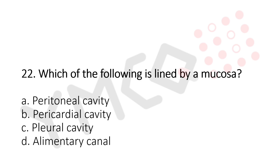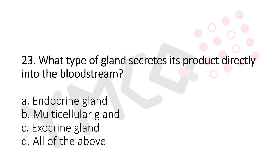Question 22: Which of the following is lined by mucosa? Option A: peritoneal cavity. Option B: pericardial cavity. Option C: pleural cavity. Option D: alimentary canal. The answer is Option D, alimentary canal.